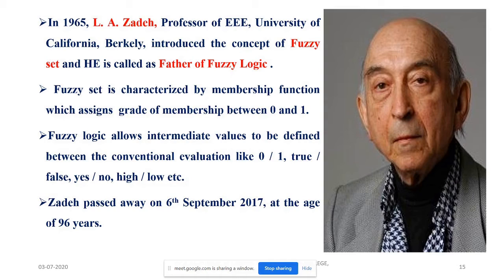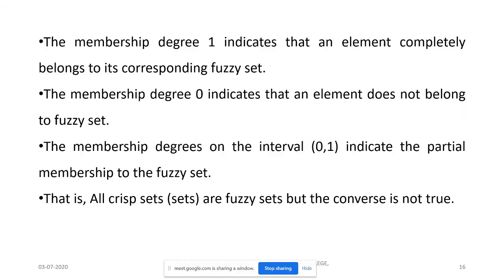Lotfi A. Zadeh, Professor at the University of California, Berkeley, introduced fuzzy sets in 1965 and is called the father of fuzzy logic. Fuzzy sets are characterized by a membership function that assigns a grade of membership between 0 and 1. Fuzzy logic allows intermediate values between conventional evaluations like true/false, yes/no, or high/low. Zadeh passed away on 6th September 2017 at the age of 96. A membership degree of 1 means complete membership; 0 means no membership; values in between indicate partial membership.